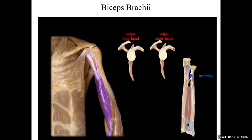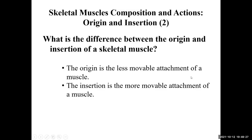For the biceps brachii, the origins are up at the shoulder for the long head and short head. The insertion — which attaches at the radial tuberosity — is the more movable component.